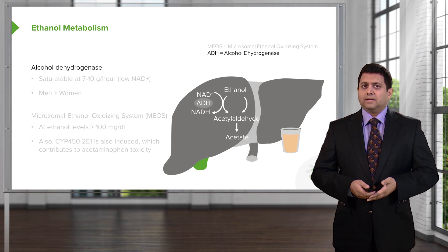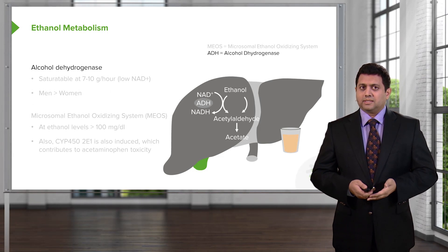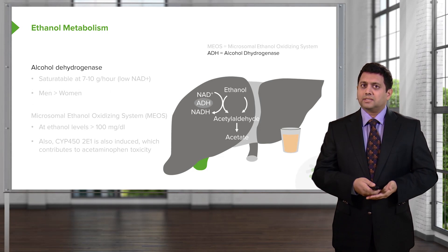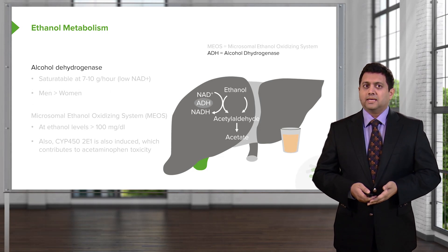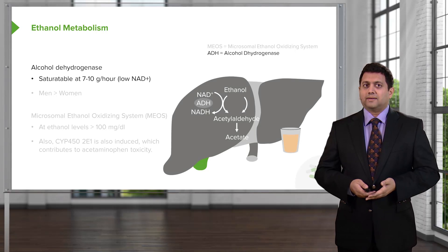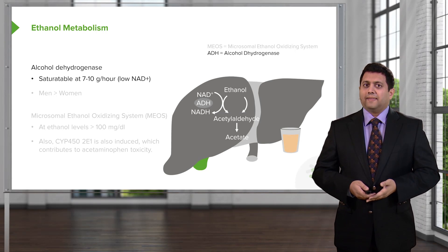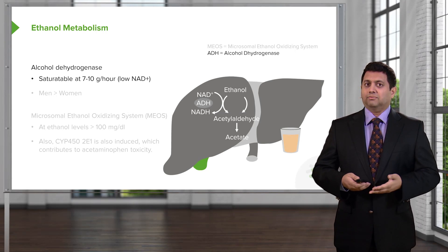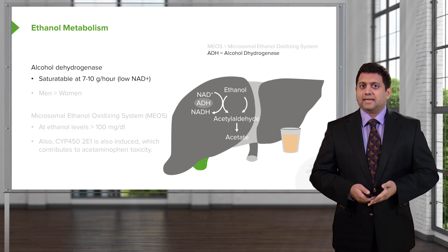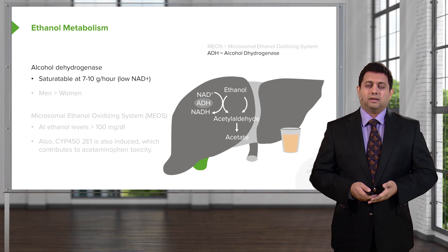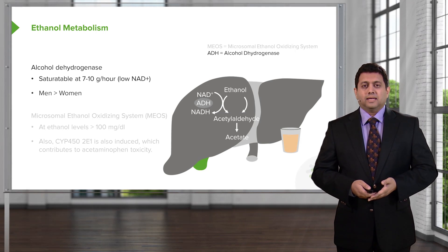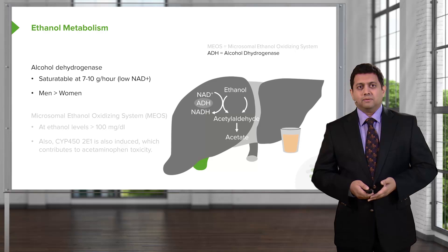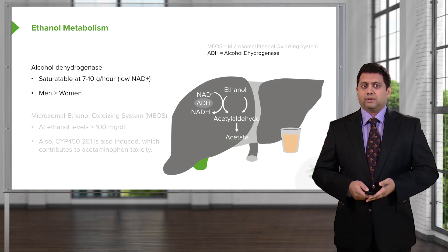Ethanol is broken down by one of two systems. The first system is alcohol dehydrogenase. It is saturable at about 7 to 10 grams an hour, because you run out of NAD to power that particular enzyme. It is more active in men than compared to women.